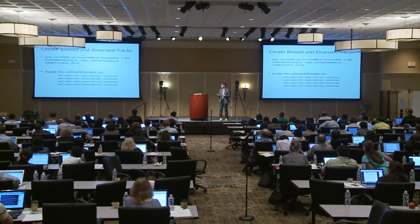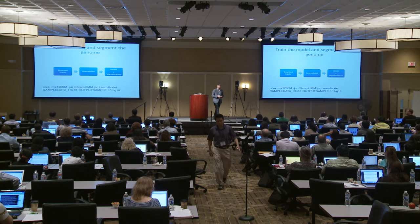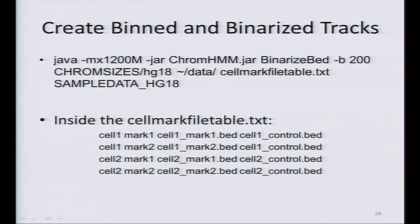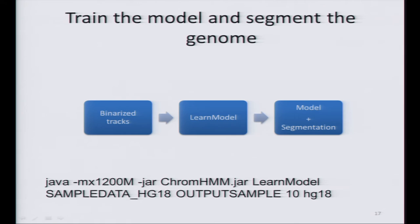Up to here we have these binarized tracks, but still we don't have the chromatin states. To get the chromatin states and to train the model, we just need one more step. We have our sample data folder created in the previous step with the binarized tracks stored there. This will be the input for the next step: we take these binarized tracks, run the hidden Markov model in ChromHMM, and we will get both the model and the segmentation.